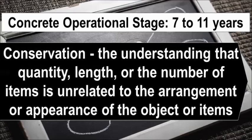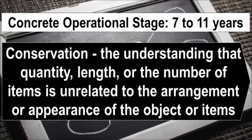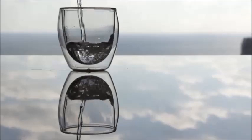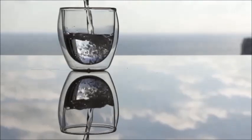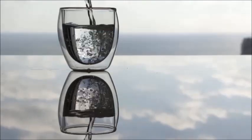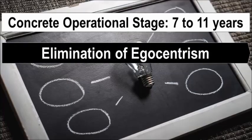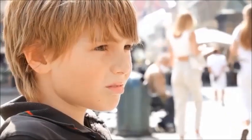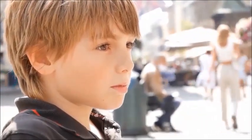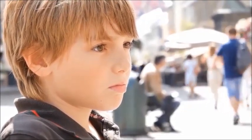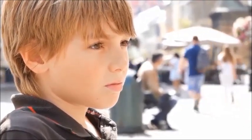Next is conservation, or the understanding that quantity, length, or the number of items is unrelated to the arrangement or appearance of the object or items. For instance, when a child is presented with two equally sized, full cups, they will be able to discern that if the water is transferred to a pitcher, it will conserve the quantity and be equal to the other filled cup. Lastly, the elimination of egocentrism is the ability to view things from another's perspective. Kids in the concrete operational stage also begin to understand that their thoughts are unique to them and that not everyone else necessarily shares their thoughts, feelings, and opinions.